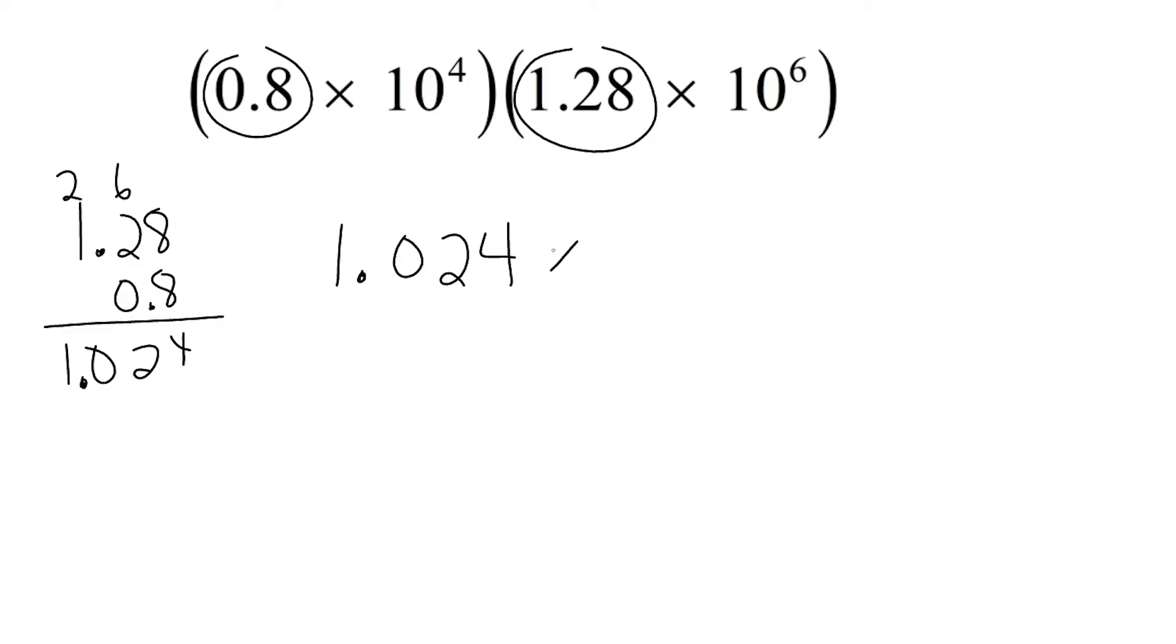So let's go ahead and write 1.024 here. And now we're going to bring down our base 10 and take these two exponents and add them together. So remember, whenever you're multiplying two bases that are the same, we can simply add their exponents. And 4 plus 6 is 10. So that would give us 10 to the tenth power. So this is our answer.